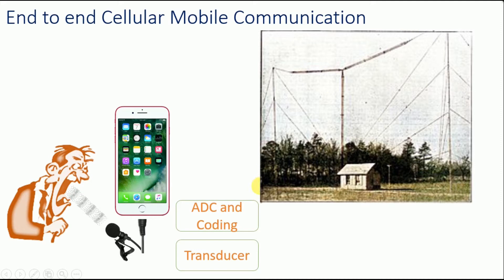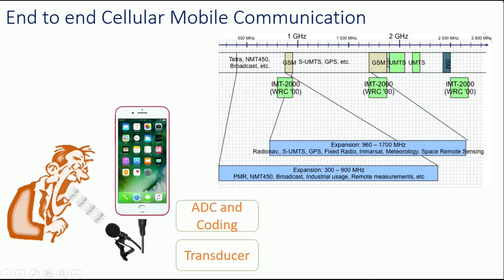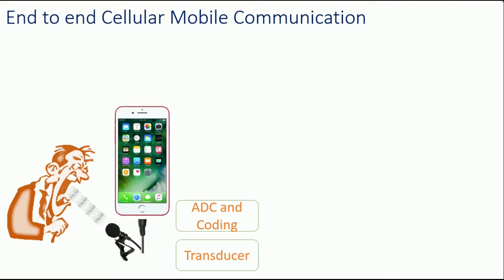If we have a low frequency content, we would eventually need a very big antenna to transmit the signal, and hence that is not possible. So we need to modulate the signal to a higher frequency. Besides the antenna size, we also need to super-heterodyne or shift the frequency spectrum to appropriate frequency bands set forth by the operators and regulators.